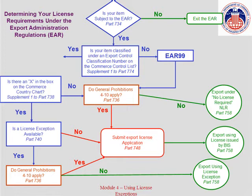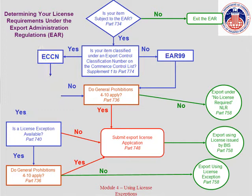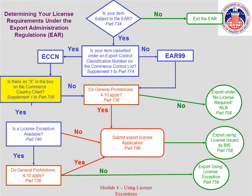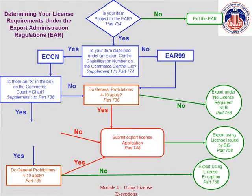Looking at the flow chart, and generally speaking, if your item has an export control classification number, and there's an X in the box for the reason for control for your item to its destination, you would next determine if a license exception is available for your transaction.